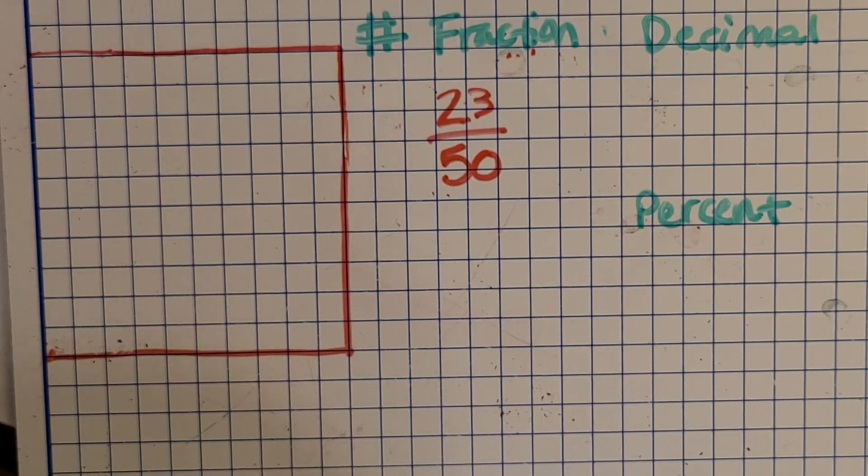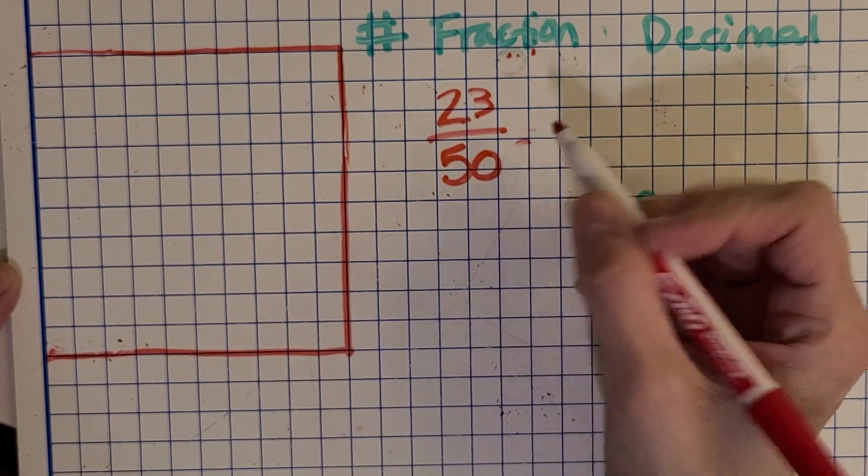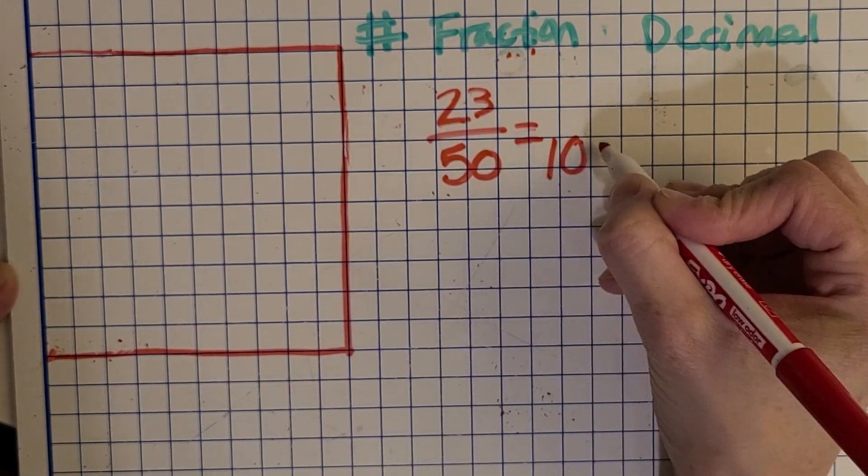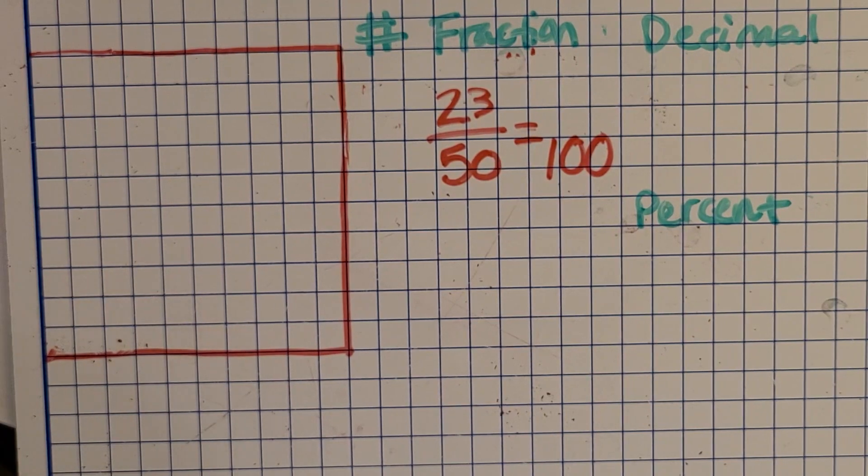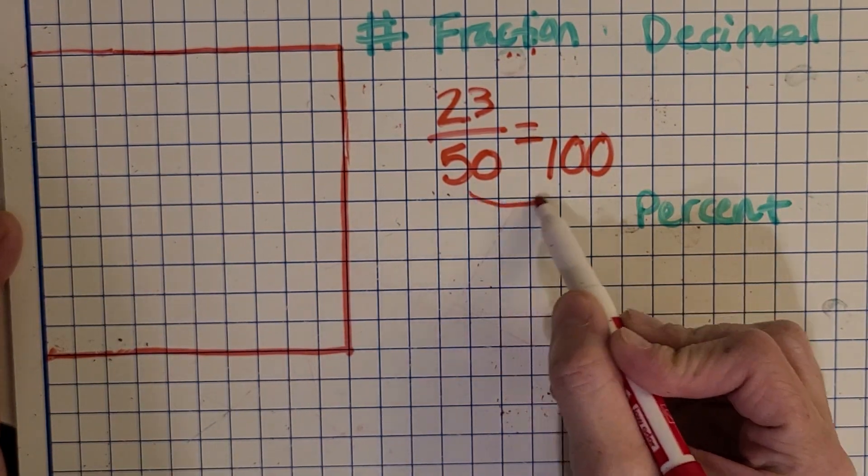So now I'm going to give you a problem where I give you the fraction first, and then we're going to figure out how to shade the model, find the decimal, find the percent. This one's a little tricky because the fraction is not out of 100. So what can I do to figure out what fraction out of 100 is equivalent to this? So you might be thinking, well, we can set up a proportion. We just recently studied that in the last video. So how do I get from 50 to 100?